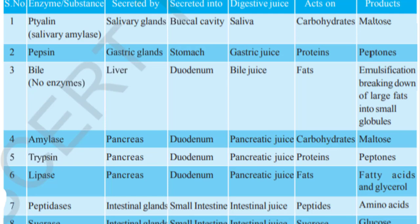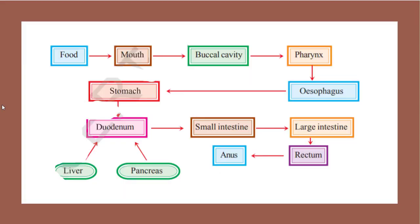The digested foods are absorbed into the bloodstream with the help of villi present in the walls of the small intestine. Now I want to show you the flowchart of digestion in humans. Food is taken into the mouth — that is ingestion. From here, food enters into the buccal cavity. In the buccal cavity, mastication — cutting, churning, mixing — occurs, and the food is mixed with saliva and becomes a slippery material.